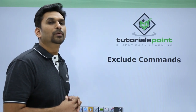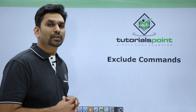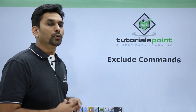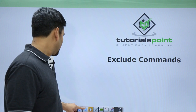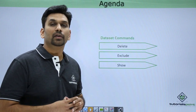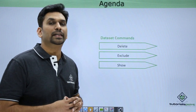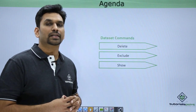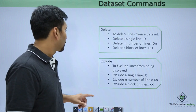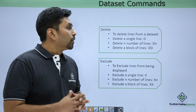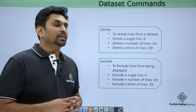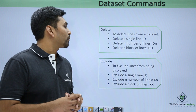Hello friends, welcome to Tutorials Point. In this video we'll see exclude commands. This is the agenda — we'll first cover delete, then exclude, and then the show commands. To delete lines from a dataset, you need to write D in the line number area and press Enter.